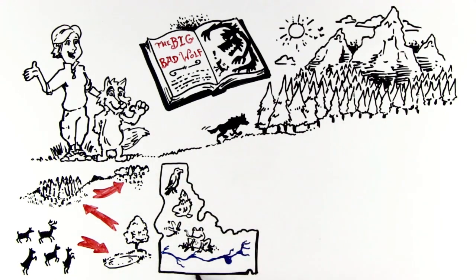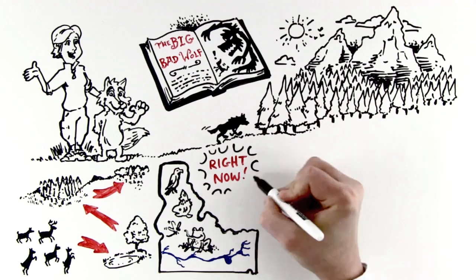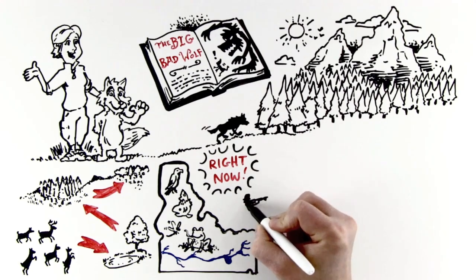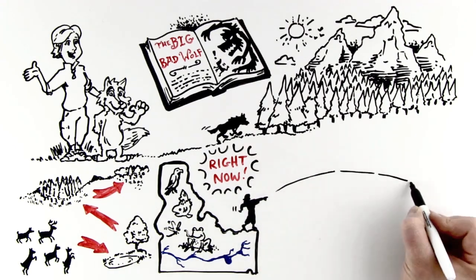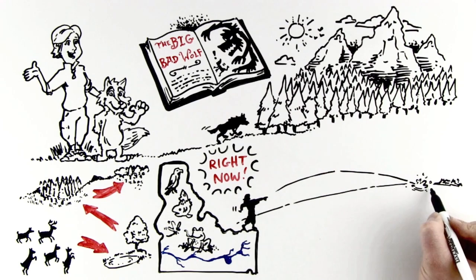We can see this effect taking place in Idaho right now. Having plenty of wolves in Idaho for the first time in seven decades is like a ripple effect from a pebble tossed into a pond.